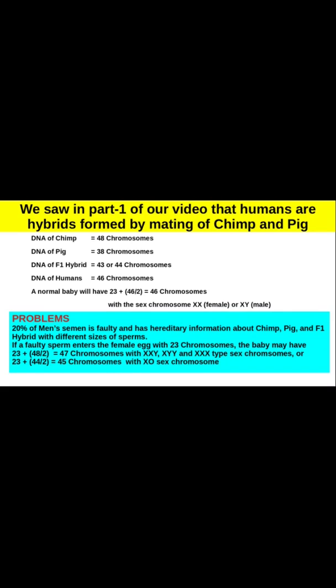A normal baby will have 23 plus 23 equals 46 chromosomes, with the sex chromosome XX for female or XY for male.